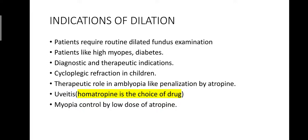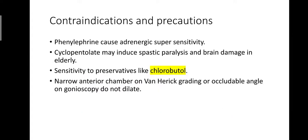Cycloplegics have a therapeutic role in amblyopia, such as penalization by atropine; in uveitis, for which homatropine is the drug of choice; and myopia can also be controlled by low doses of atropine.